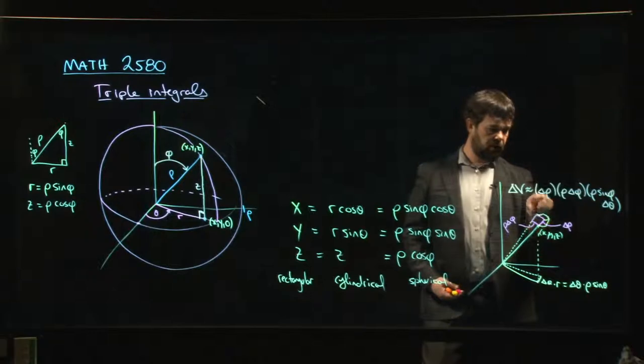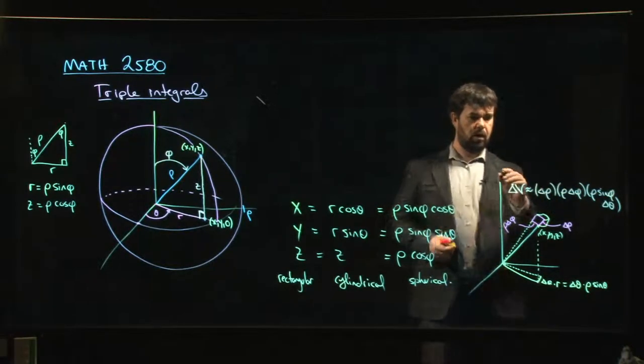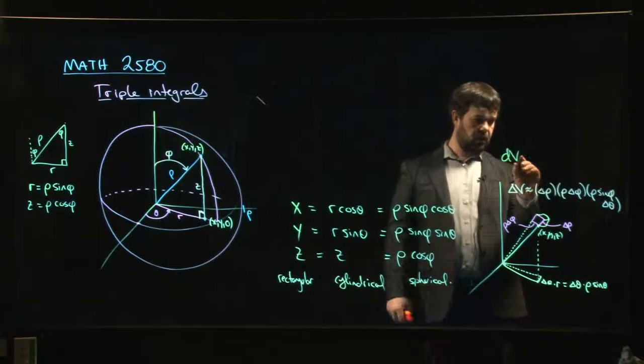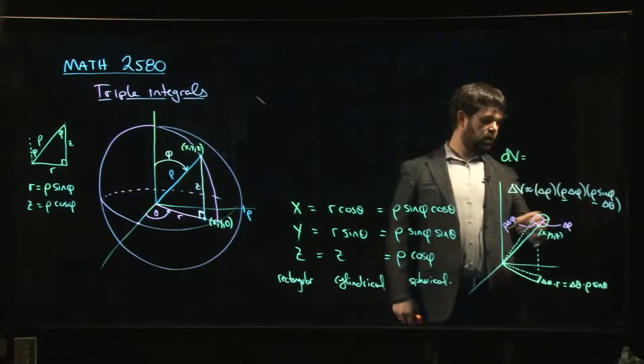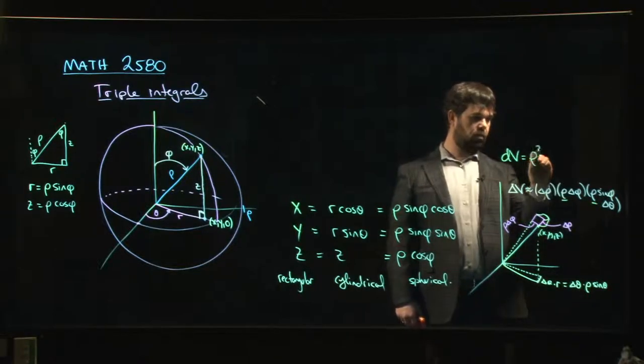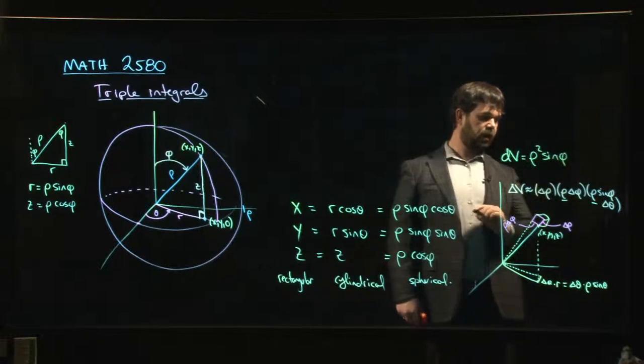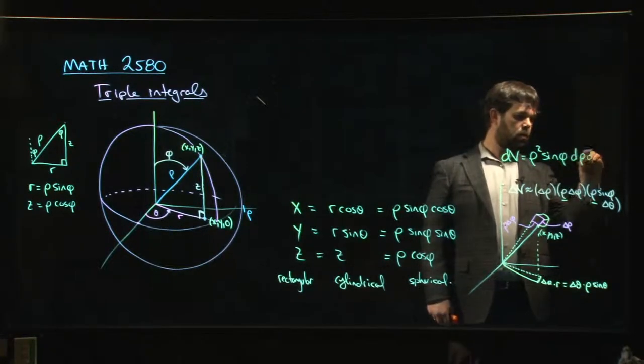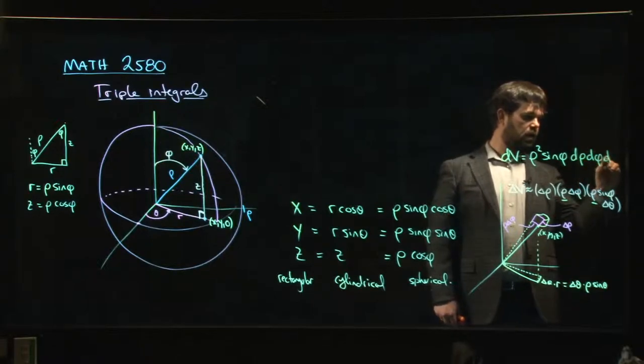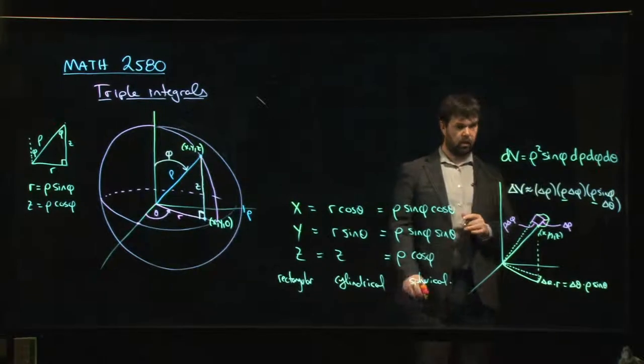So we think of it as almost like a little cube with these. So what you get is that your dv in the integral, notice there's one rho here, there's another one there, so it's rho squared, and then there's that sine phi. Okay?